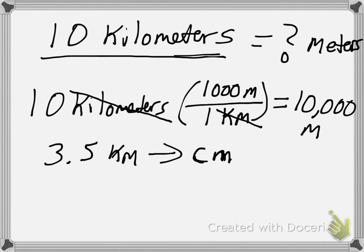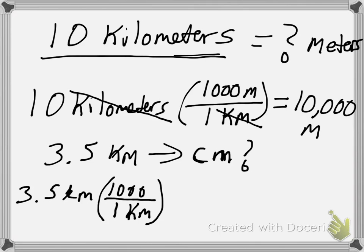How many centimeters is this? So a quick easy way to do this would be 3.5 kilometers, and now let's convert from kilometers to meters. And we know that in one kilometer there's a thousand meters. But now I need a second conversion factor to go from meters to centimeters. And so since I have meters up top here, I'm going to need meters on bottom here, and we know that there's one meter for every hundred centimeters.